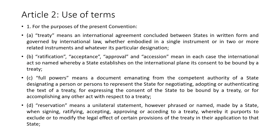Article 2(1)(b) defines ratification, acceptance, approval, and accession, which cumulatively mean the international act whereby a state establishes on the international plane its consent to be bound by a treaty. Through these four methods, consent to be bound by a treaty can be obtained. In a particular process we may use ratification; in another we may use accession; in another, signature — depending on the process adopted, these words may be used, but cumulatively they show consent.